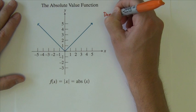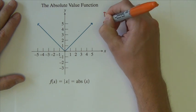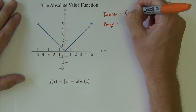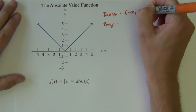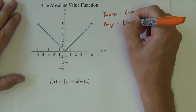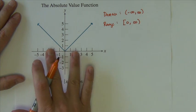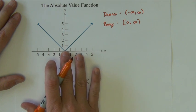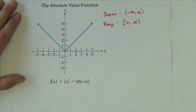Its domain and range. Its domain is negative infinity to positive infinity, and it will always be that. Its range, in this case, is 0 to infinity. It starts at 0 on the y, and it goes up to infinity from there.